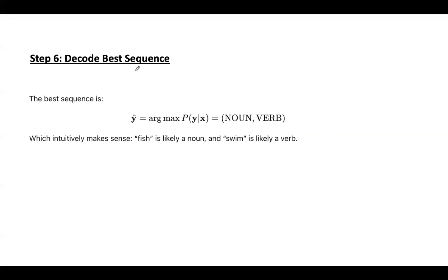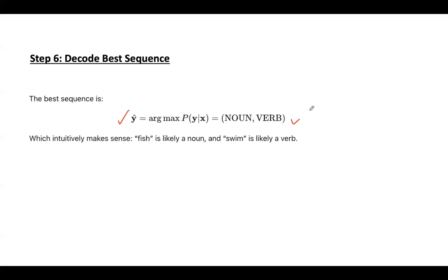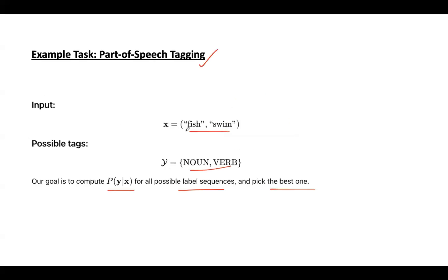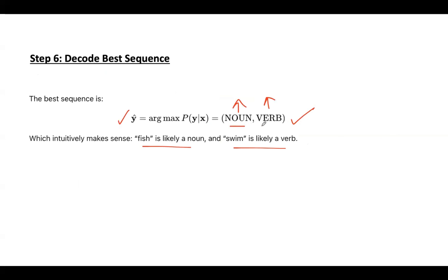Decode the best sequence now. That will be done using this notation: arg max of P of Y given X. Out of all these sequences, this is the one which is having highest probability: noun comma verb. That value means that fish is likely a noun whereas swim is likely verb. The first input word is fish, second input word is swim. So for those words, these are the respective tags.